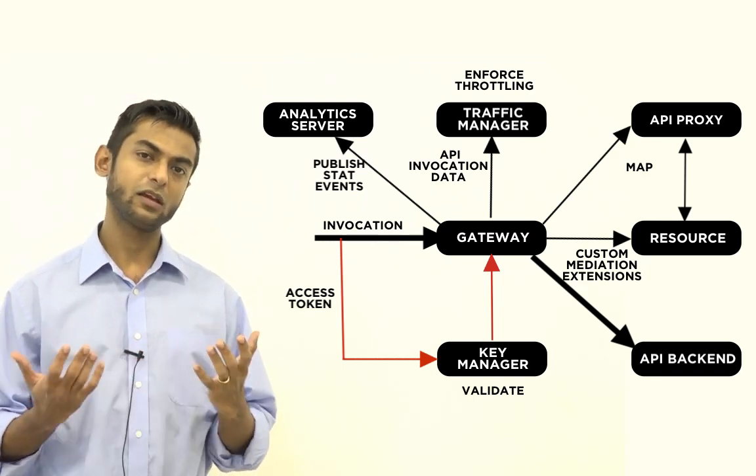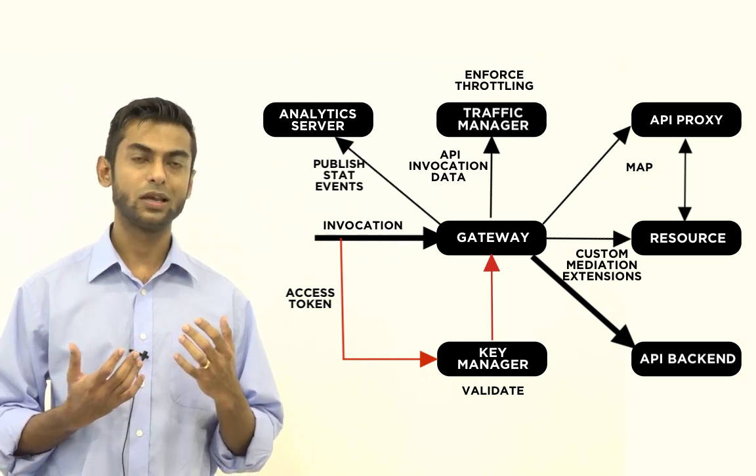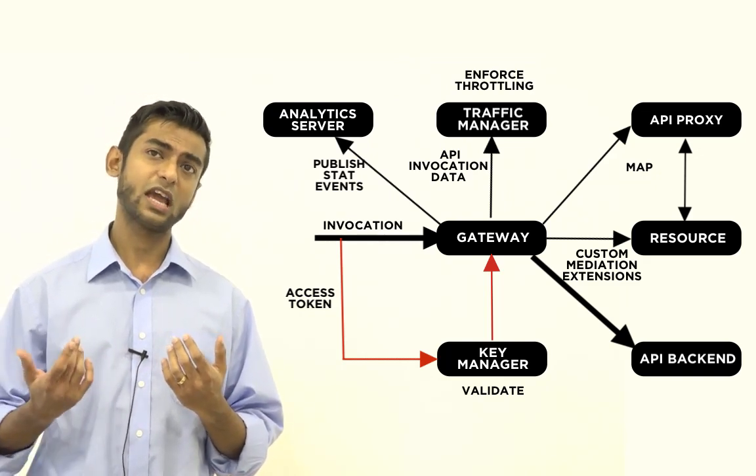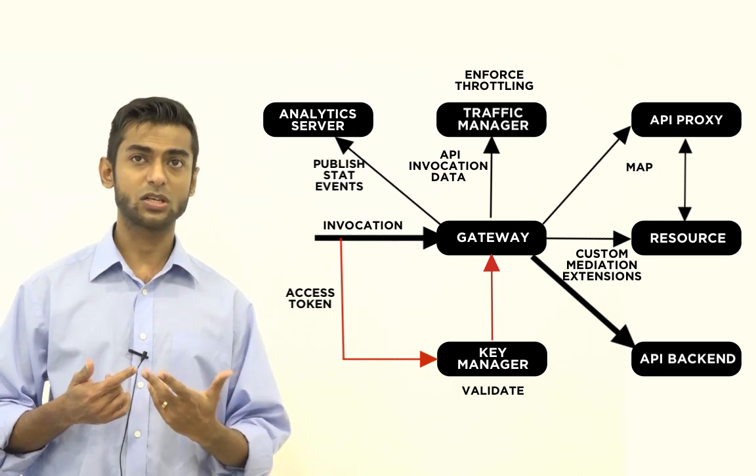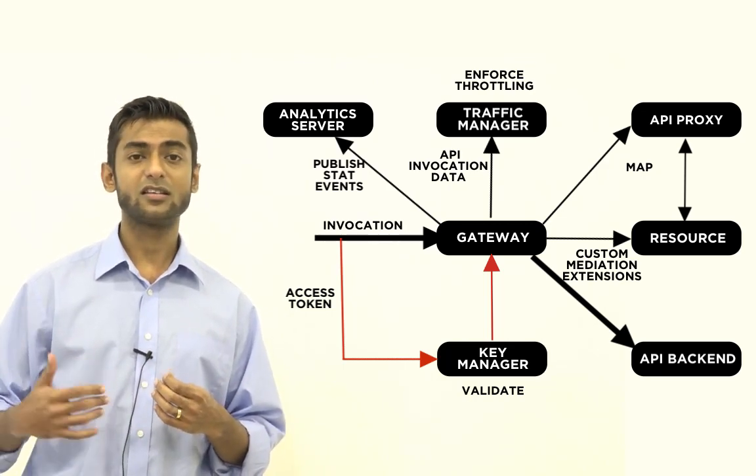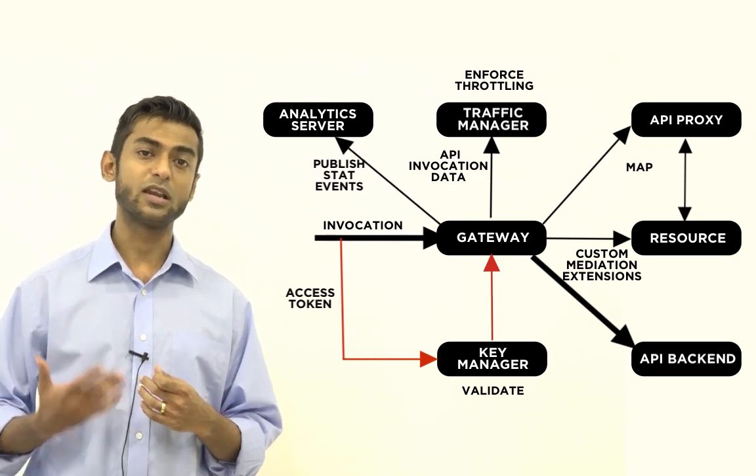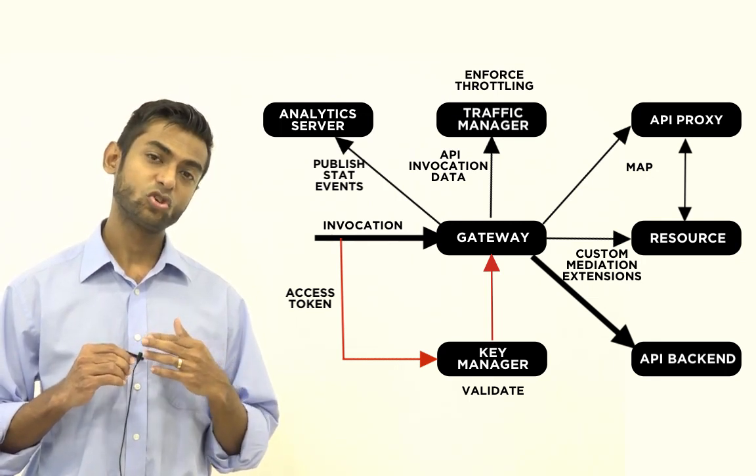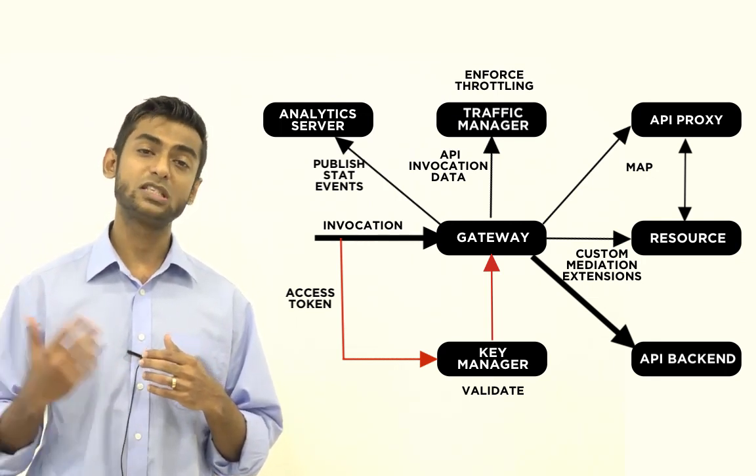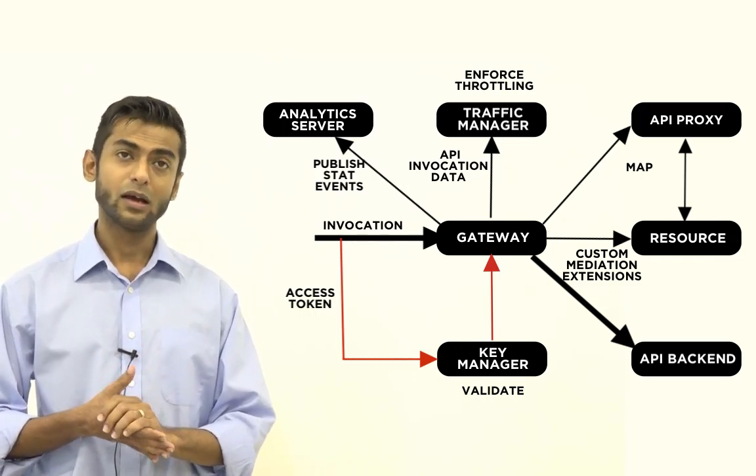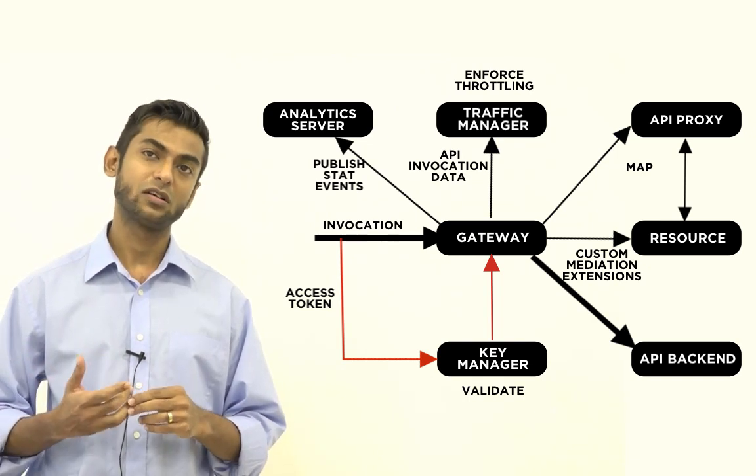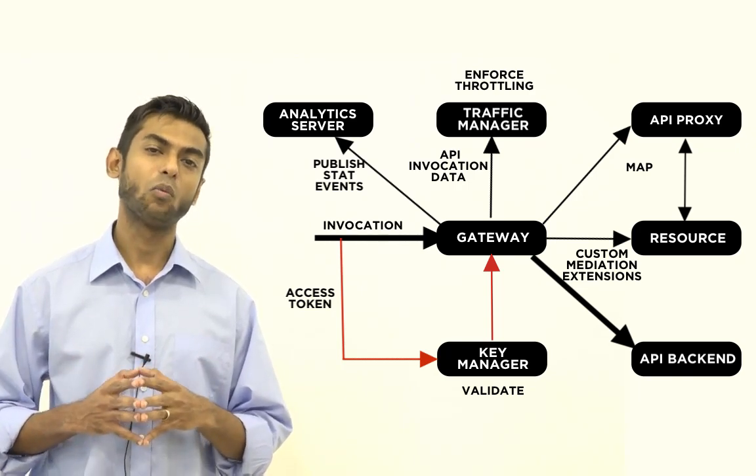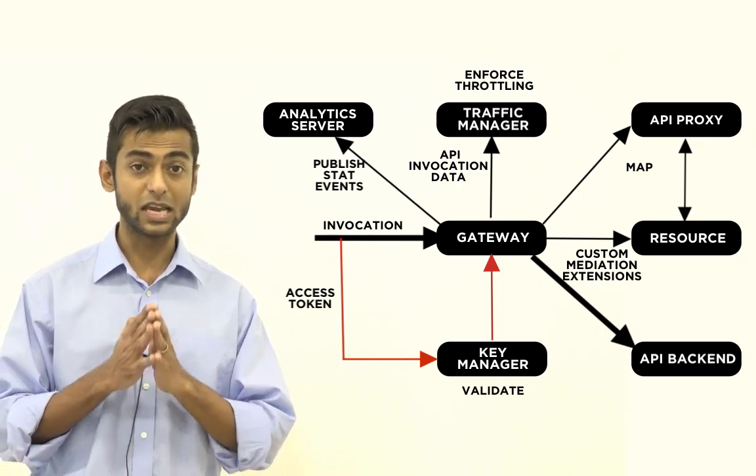So the first thing that we can look at is the actual API call authorization. So as I mentioned before, the key manager is responsible for checking the access token that is sent in the API invocation against the data in the database to see if it is valid and then it will respond to the gateway. And so once the gateway receives this validation information, it can actually cache this information. And so there are two options for caching this information.